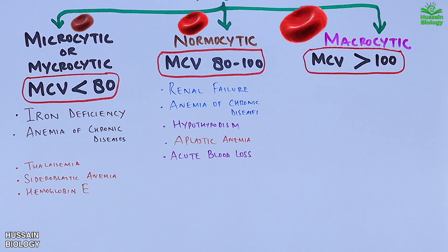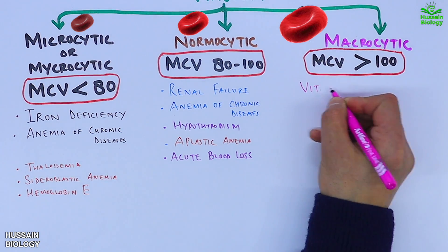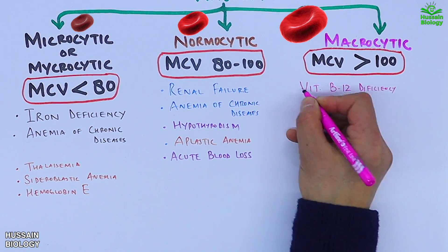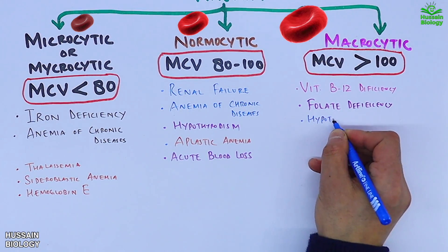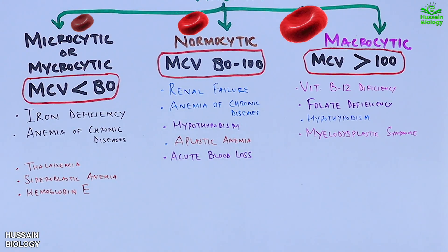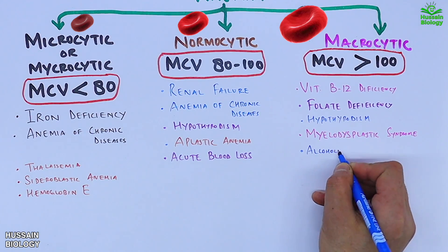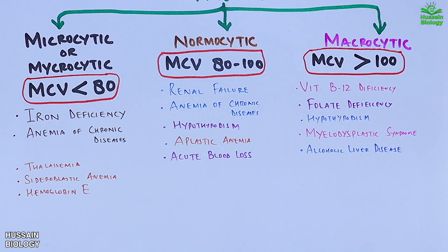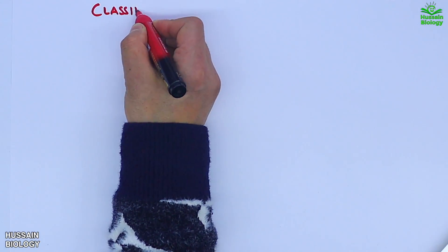In macrocytic anemia, the bone marrow produces abnormally larger RBCs, leading to higher MCV values greater than 100. Macrocytic anemia is often caused by vitamin B12 deficiency, folate deficiency, hypothyroidism, myelodysplastic syndrome, and alcoholic liver disease.